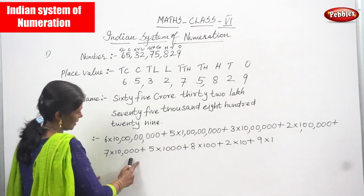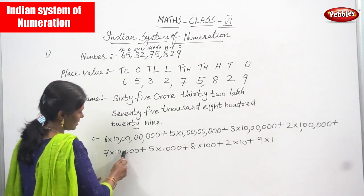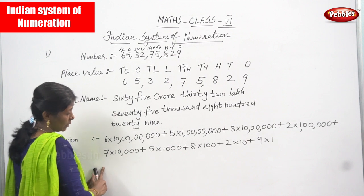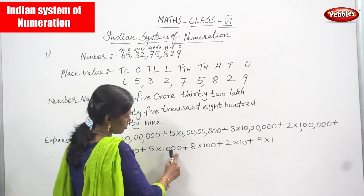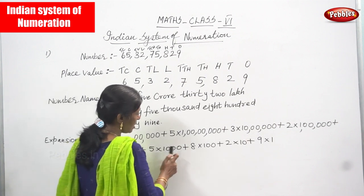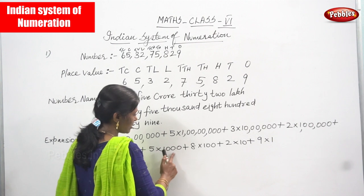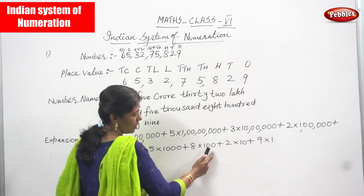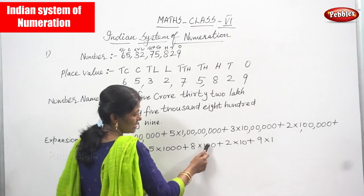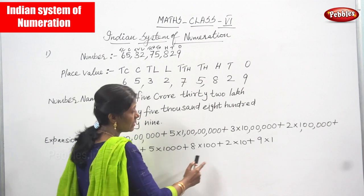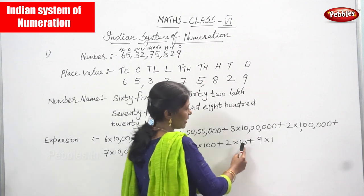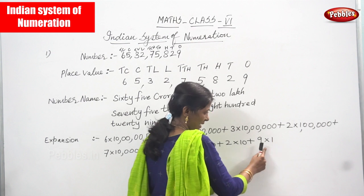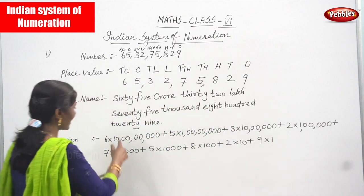Plus 7 into ten thousand = 70,000, plus 5 into thousand = 5,000, plus 8 into hundred = 800, plus 2 into 10 = 20, plus 9 into 1 = 9.